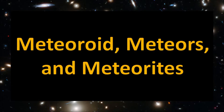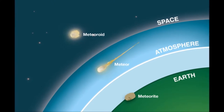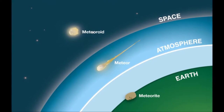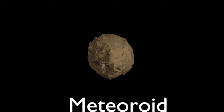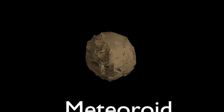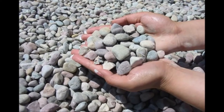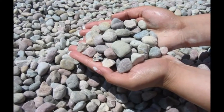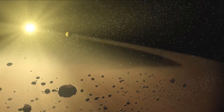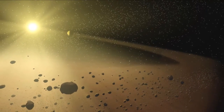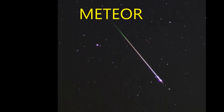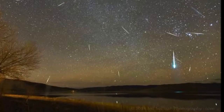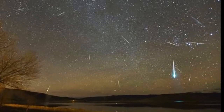Now let's learn about meteoroids, meteors, and meteorites. These three words all describe the same object as they go through different phases. Meteoroids are similar to asteroids, but significantly smaller — about the size of a pebble. Meteoroids are mostly debris of comets, and sometimes debris of asteroids. Have you ever seen a falling star? Well, guess what? You witnessed a meteoroid hit Earth's atmosphere and turn into a meteor.